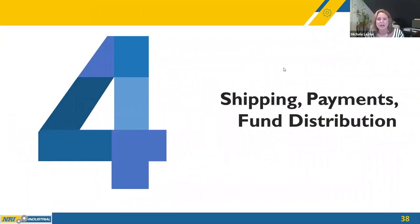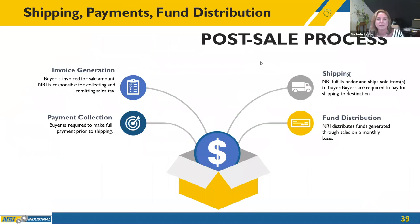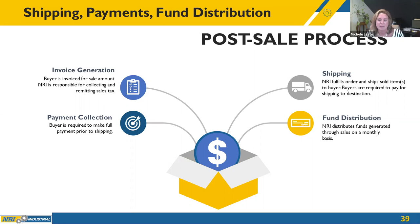Step four: shipping, payments, and fund distribution. An invoice is generated and the buyer is invoiced for the sale amount; NRI is responsible for collecting and remitting sales tax. Buyers are required to make full payment prior to shipping. NRI fulfills the order and ships sold items to the buyer; buyers are responsible for paying shipping to their destination. NRI distributes funds generated through sales on a monthly basis.